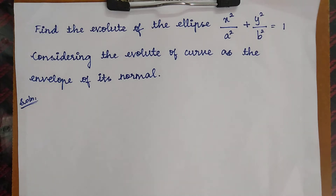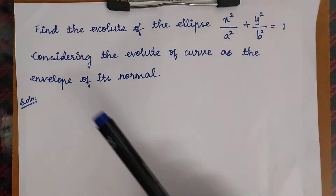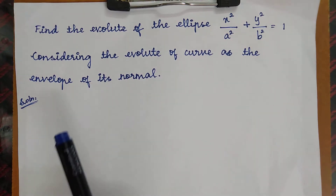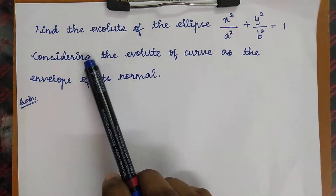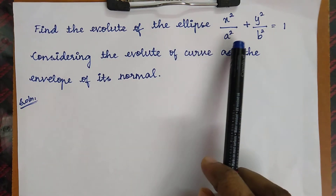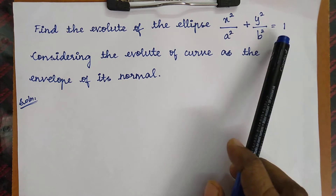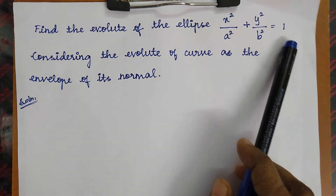Welcome to the lecture series of differential calculus. Today we are going to see a problem under evolute. Find the evolute of the ellipse x² / a² + y² / b² = 1.